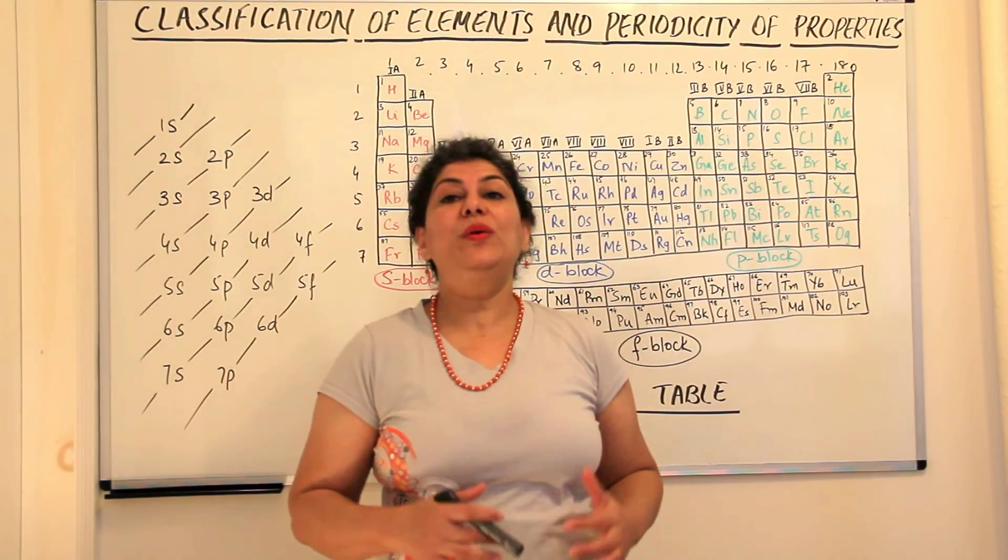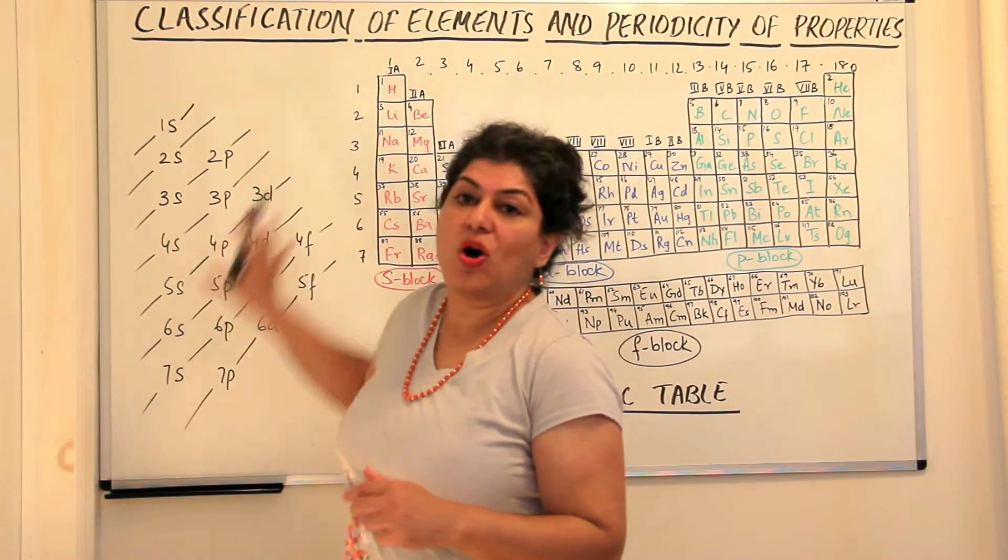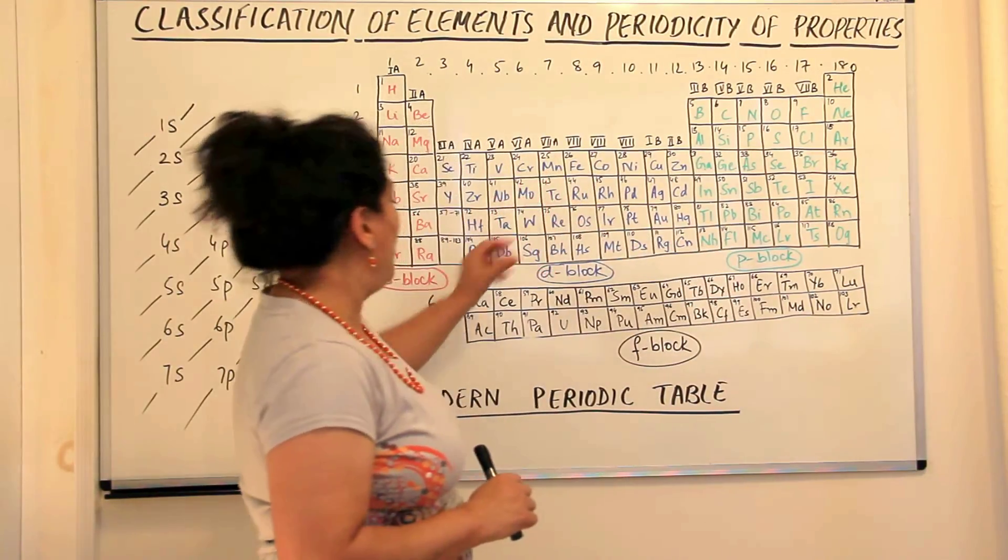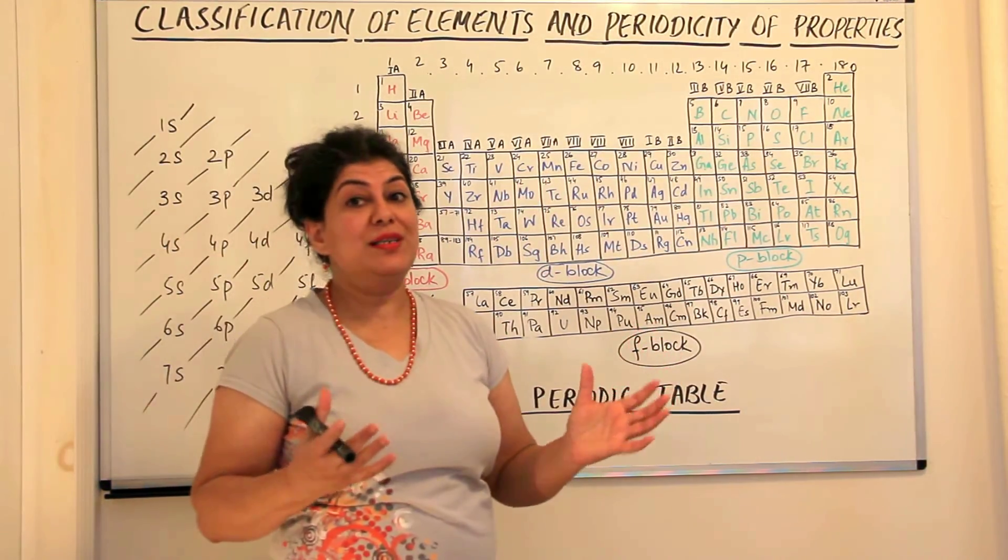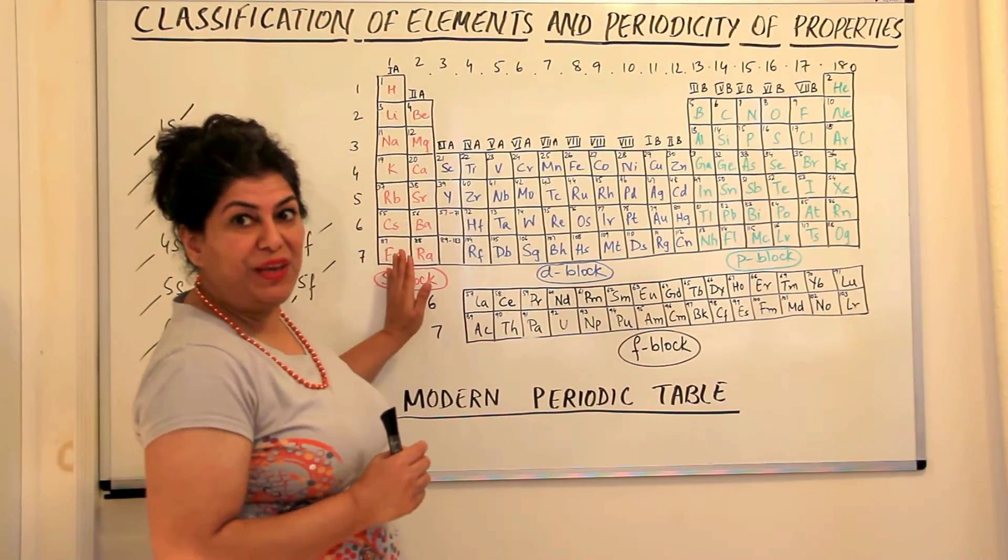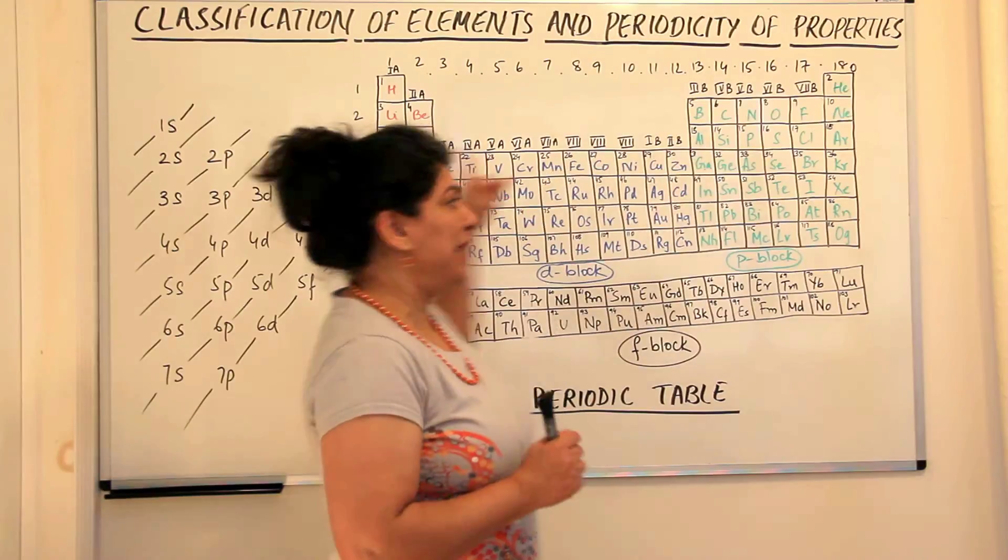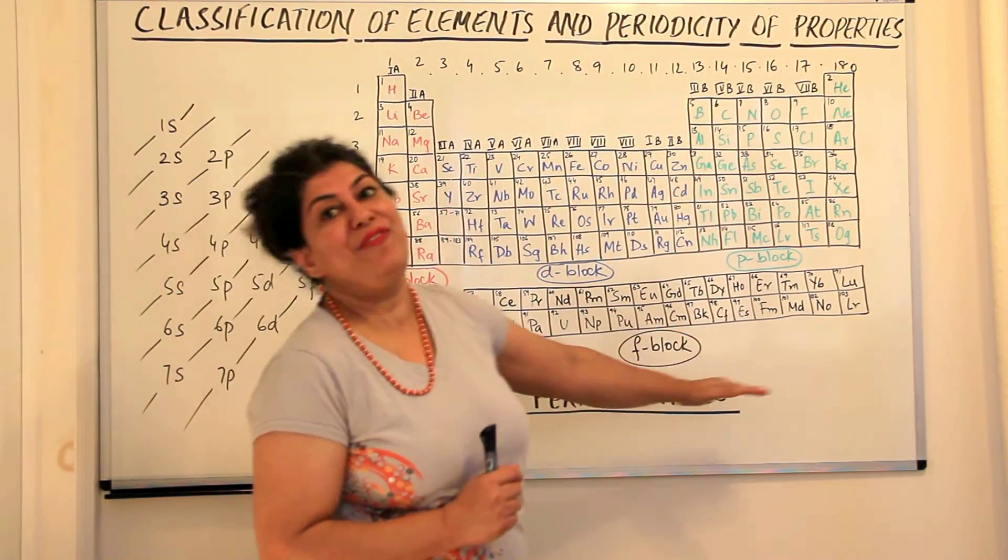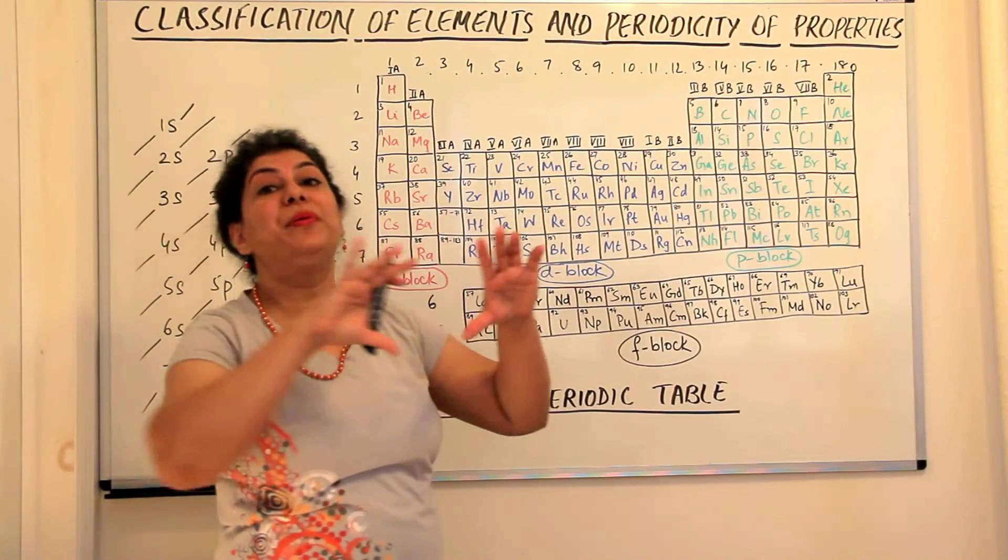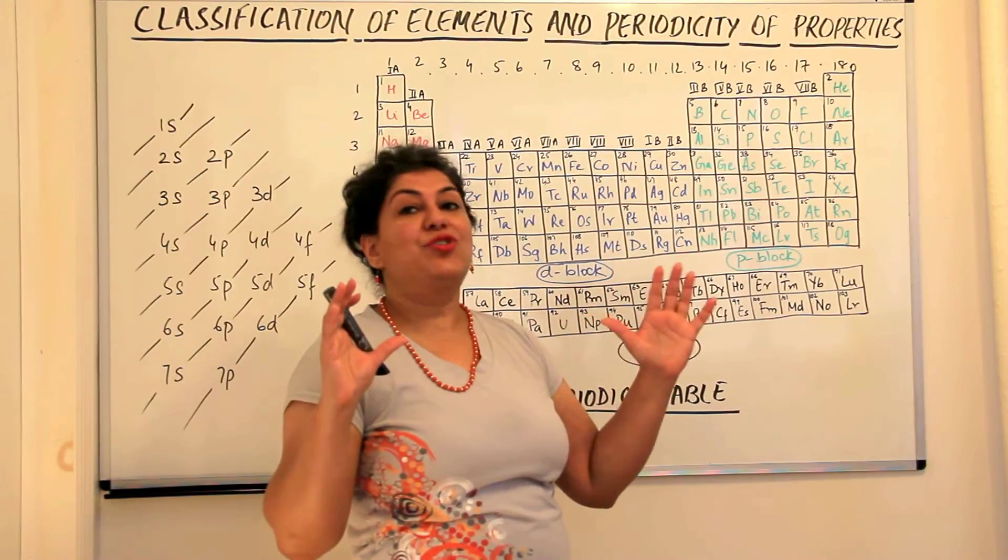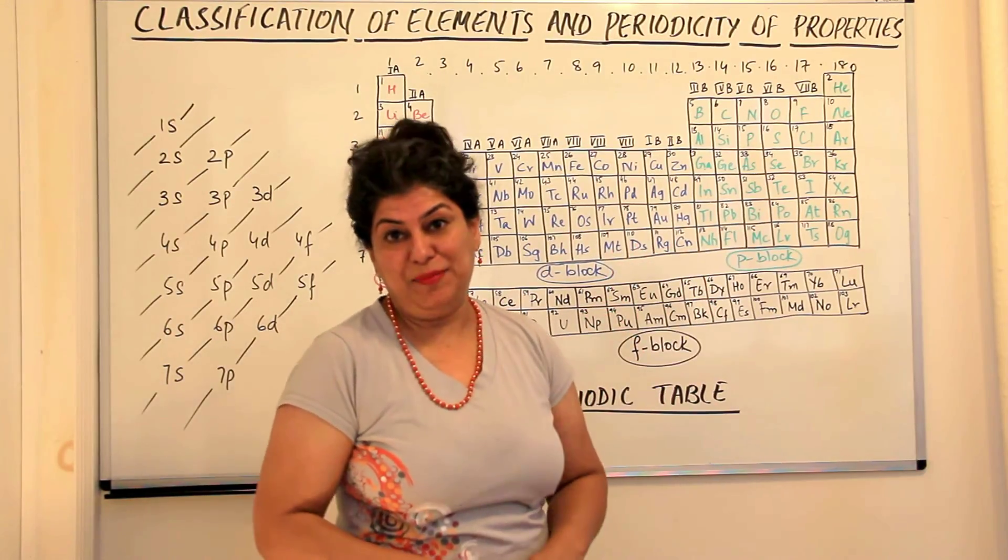So this is the basic layout of the modern periodic table and now we will study about these different blocks of elements: the s-block, the p-block, the d-block and the f-block. So now you have understood these blocks are nothing but the s orbitals being filled up, p orbitals of that particular shell being filled up and d orbitals and the f orbitals and therefore the entire periodic table has been made according to the electronic configuration of the elements.